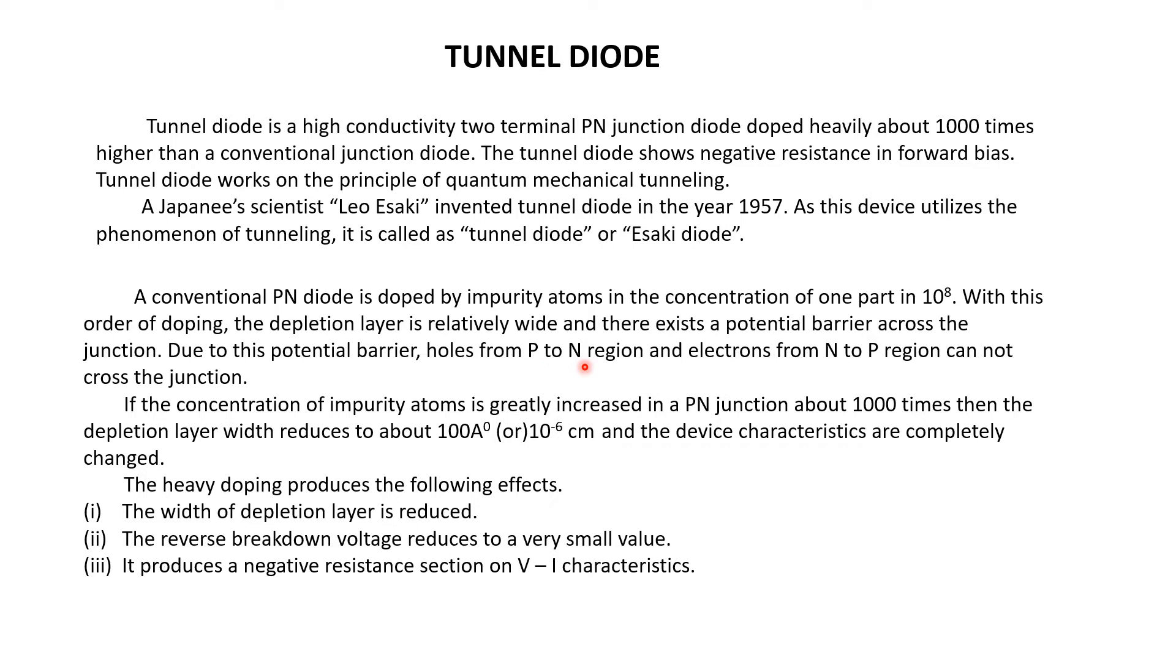Due to this potential barrier, holes from P to N region and electrons from N to P region cannot cross the junction, so the charge carriers are not able to cross the junction with this normal doping of 1 part in 10^8.